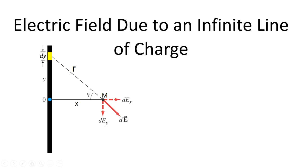If the charge was negative, the electric field will be toward the charge. This is the difference. So if the charge is positive, it will be going away from the line or element of the charge. If the charge is negative, it will be going toward the element of the charge.